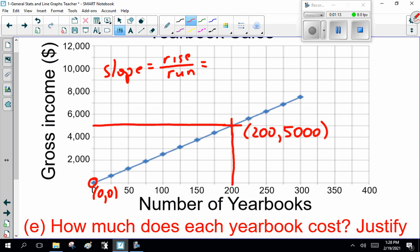Rise over run. That's my rise here, from 0 to 5,000. And my run is from 0 books to 200 books. This is 5,000, and this is 200. Now, grab the calculator. 5,000 divided by 200. I believe it's 25 dollars.